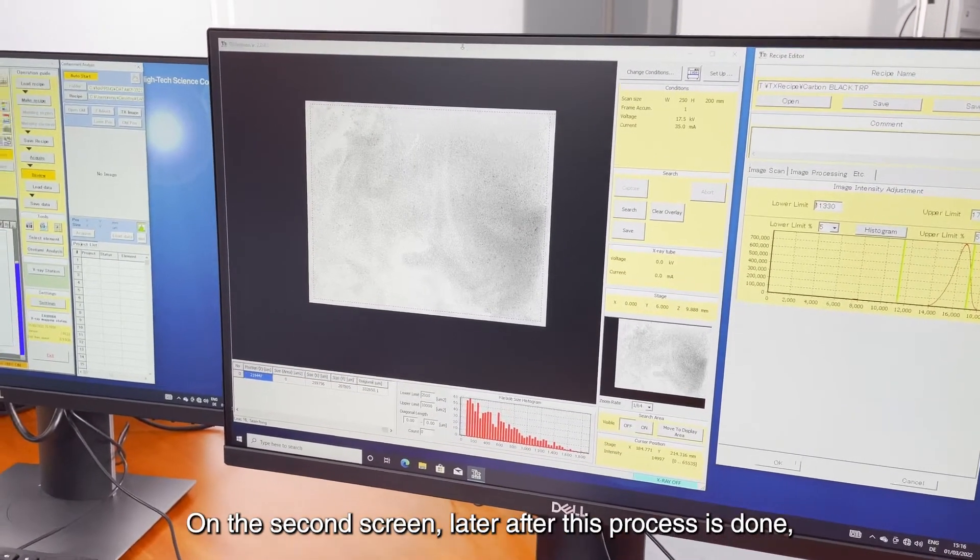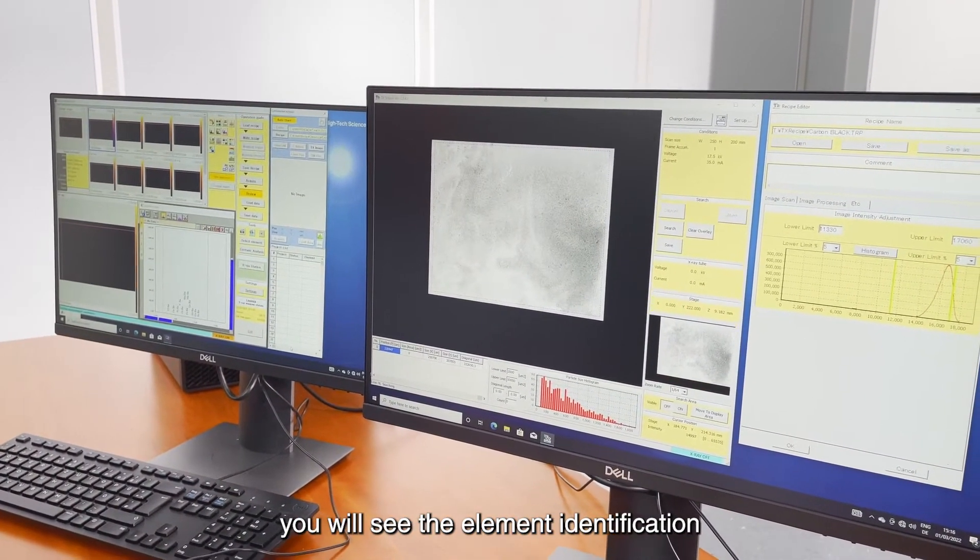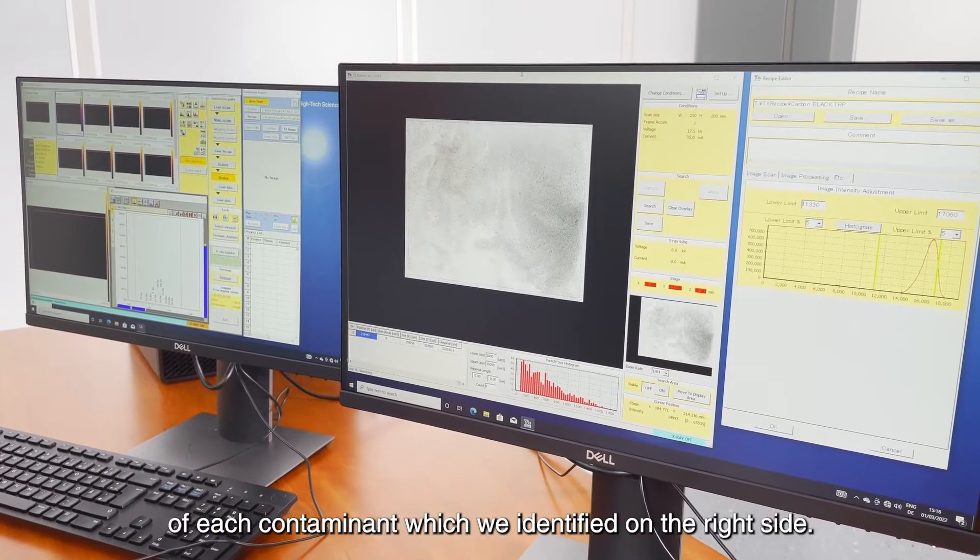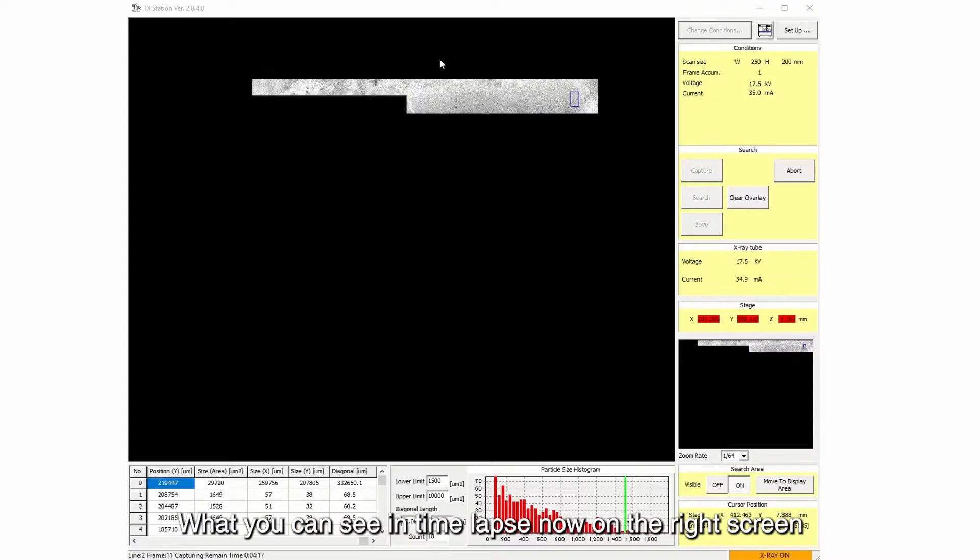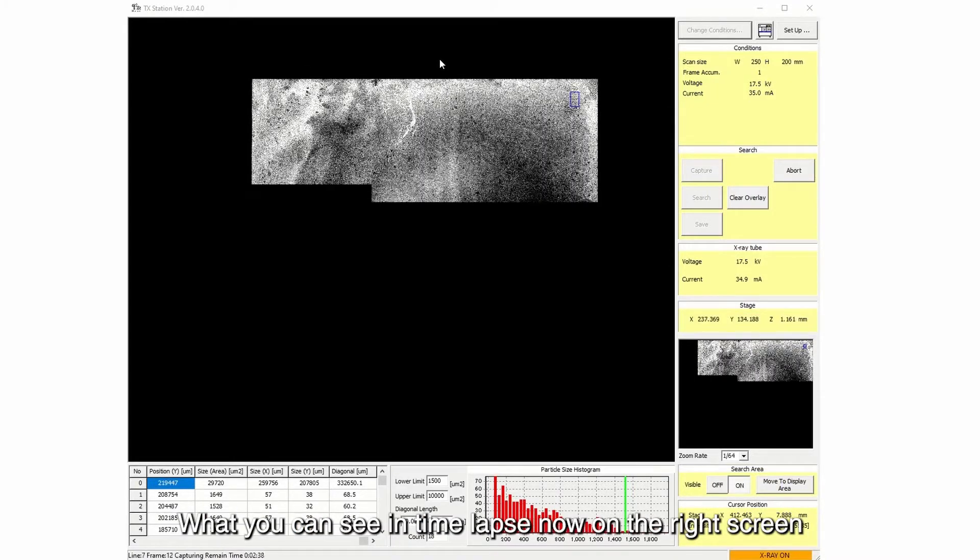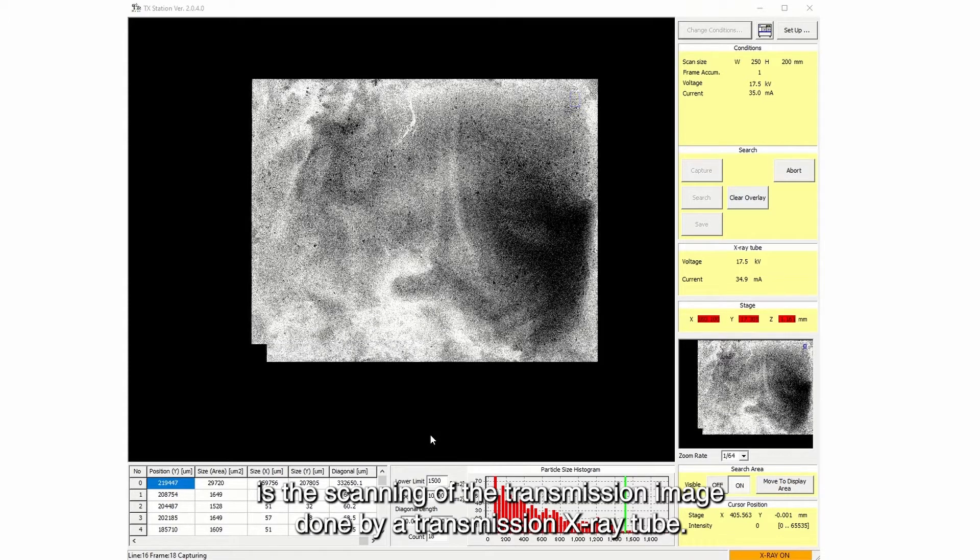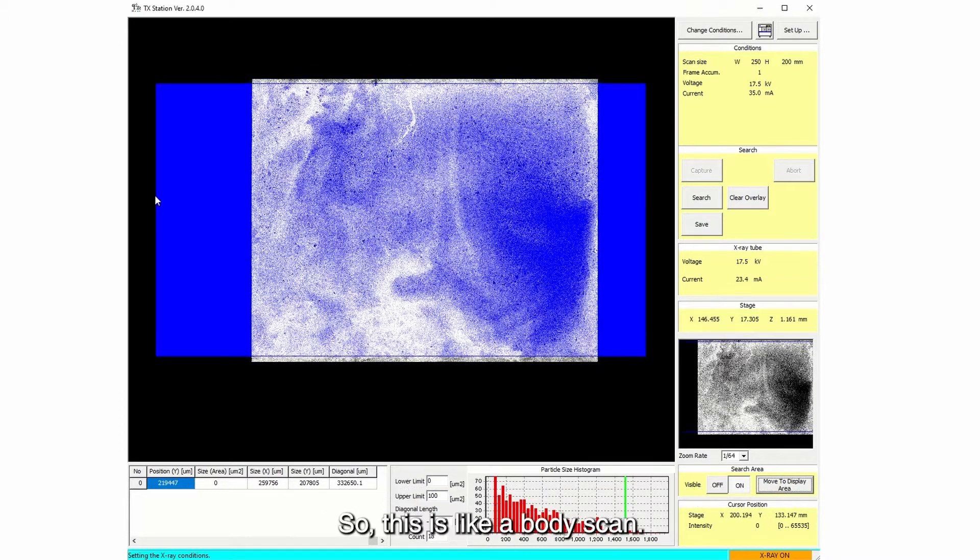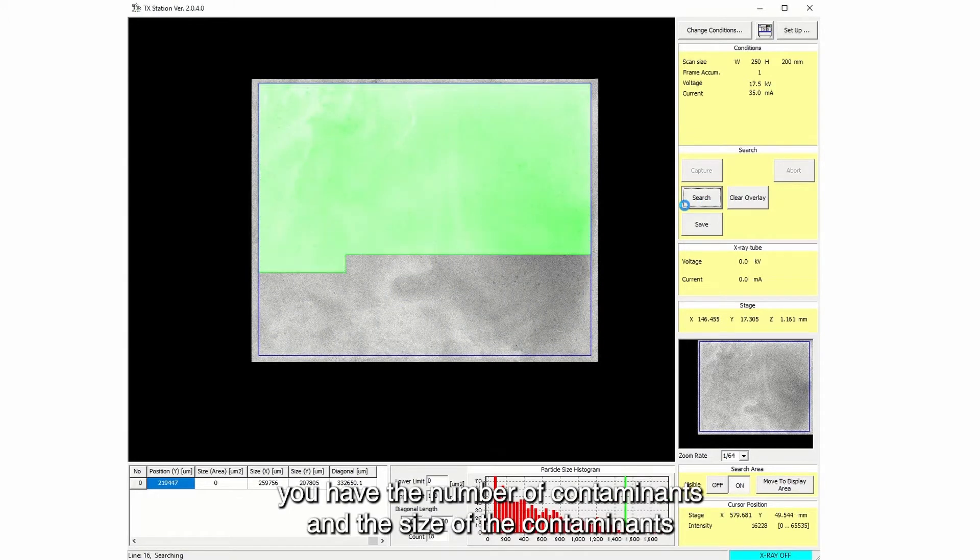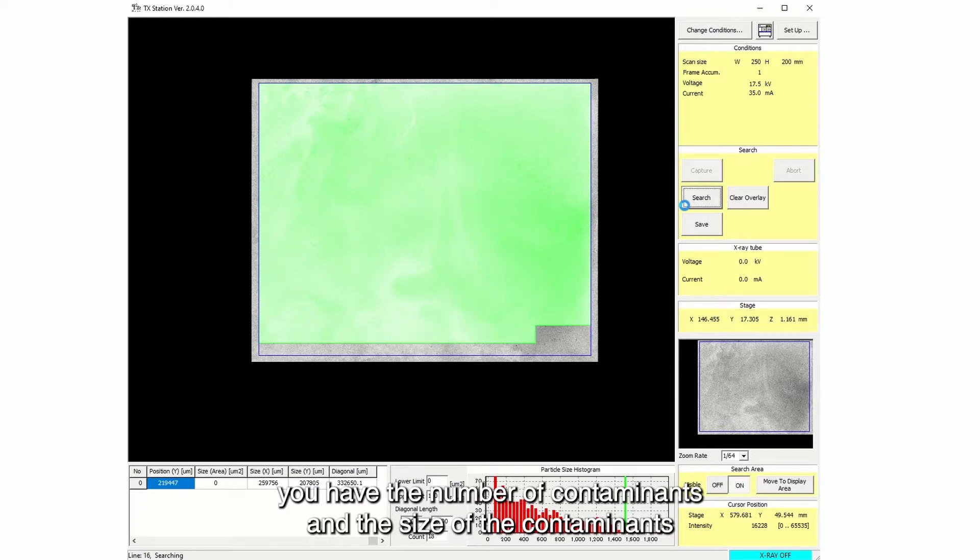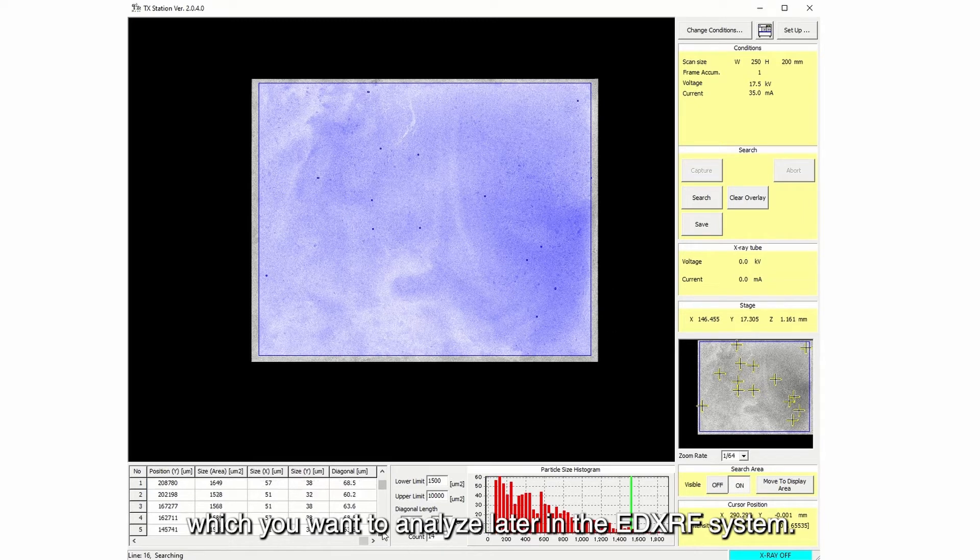On the second screen later after this process is done you will see the element identification of each contaminant which we identified on the right side. What you can see in time lapse now on the right screen is the scanning of the transmission image done by a transmission x-ray tube. So this is like a body scan. Here at the end of the scan you have the number of contaminants and you have the size of the contaminants which you want to analyze later in the EDXRF system.